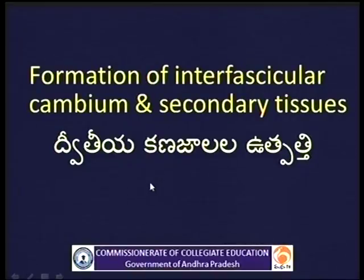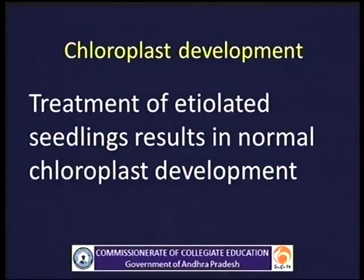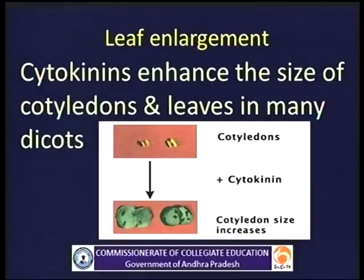Formation of interfascicular cambium and secondary tissues is also due to the cell differentiation activity of cytokinins. From the cambium, secondary xylem and secondary phloem are formed due to the action of cytokinins. Chloroplast development: Treatment of etiolated seedlings with cytokinins results in normal chloroplast development. Leaf enlargement: Cytokinins enhance the size of cotyledons and leaves in many dicots; when cotyledons are treated with cytokinins, their size increases.